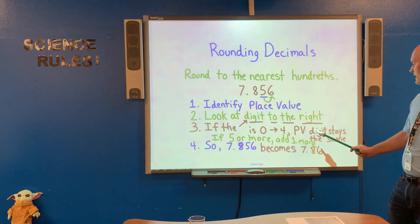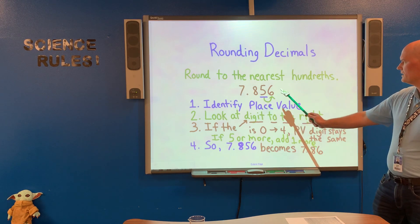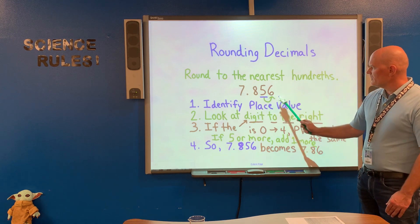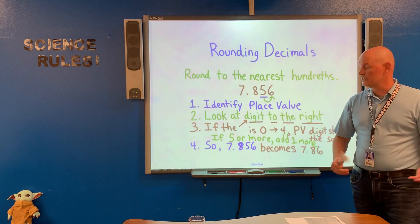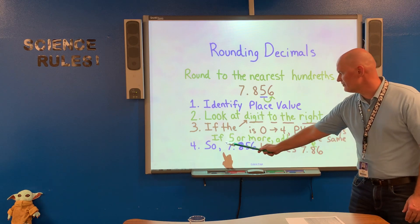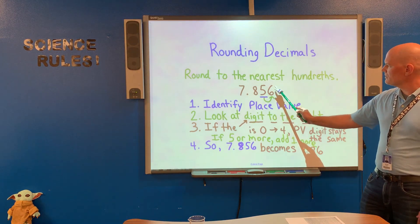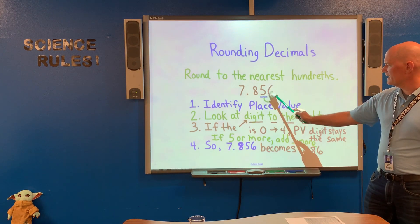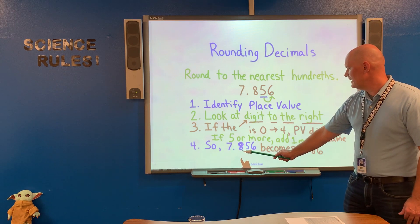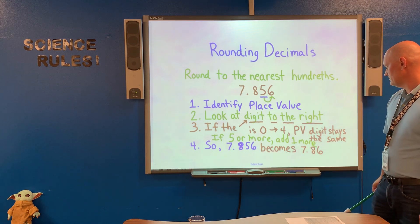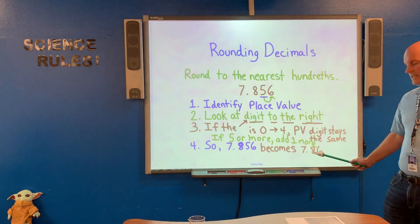Step three: if the digit to the right is zero through four, the place value digit stays the same. So if that digit had been a zero, one, two, three, or four, we would drop it off and the number would have been seven and eighty-five hundredths. However, if the digit is five or more, add one more. Here we have a six, so the hundredths place increases by one. Seven and eight hundred fifty-six thousandths becomes seven and eighty-six hundredths.